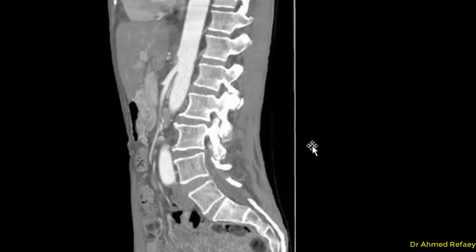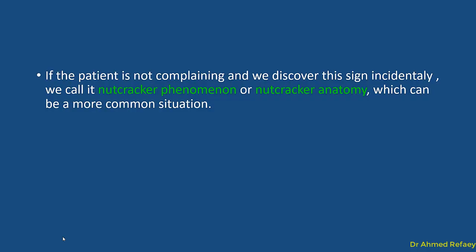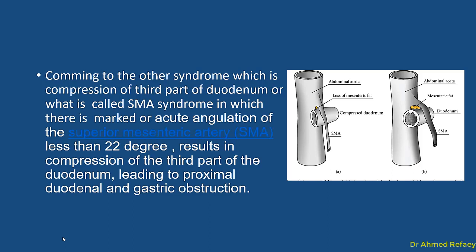On sagittal CT reconstruction, it is very easy to measure the angle between the aorta and the superior mesenteric artery, which will be less than 22 degrees, and the compression ratio will be more than 2.25. If the patient is asymptomatic and this finding is discovered incidentally on CT abdomen, we should not call it Nutcracker Syndrome but rather Nutcracker Phenomenon or Nutcracker Anatomy.